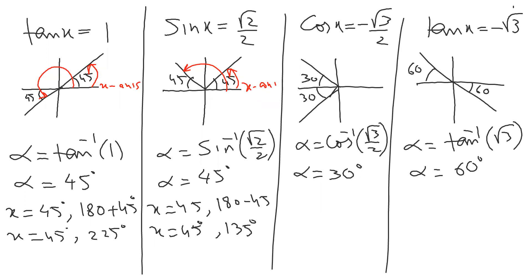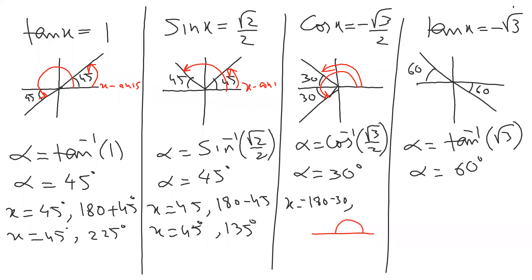Third question: x equals — start from positive x-axis and stop till the line. Common sense: 180 minus 30, because this angle I don't want. That is the first answer. Second angle: start from here and go forward, so 180 plus 30. Answers are 150 and 210.